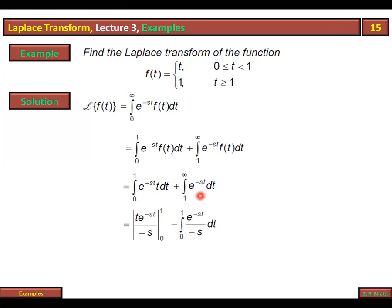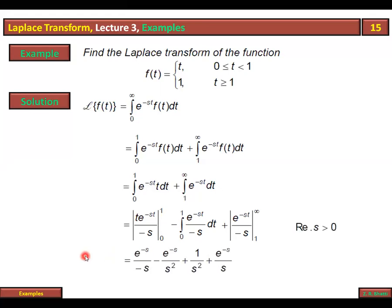Is integral ki integration e^(-st) over (-s) aayegi. Limits apply karte hain: upper limit par t=1 put kiya, lower limit par t=0. Minus minus plus ho gaya, aur ek s pehle se tha, ek aur aaya to s² ban gaya. Isi tarah doosre part mein bhi minus minus plus, aur s² ban gaya. Upper limit par e^(-infinity) = 0 ho jata hai.